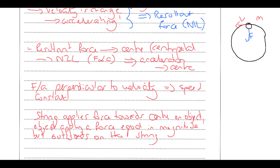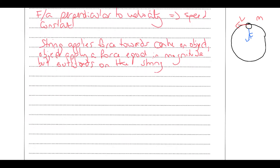Why can't the string be horizontal? If we look at the object in horizontal circular motion, it has a weight force acting vertically downwards, and if it's horizontal, the tension acts horizontally. To stay in equilibrium vertically, there must be a component of tension acting upwards to cancel out mg. But if the force is purely horizontal, there is no vertical component, so it can't stay in vertical equilibrium. That's why the string must always be at an angle — forming a conical pendulum.